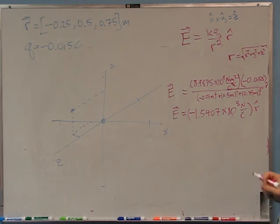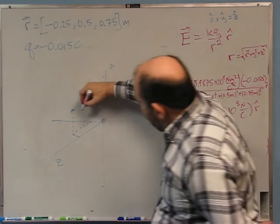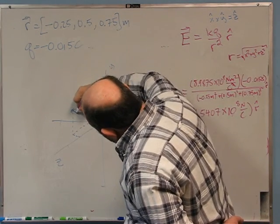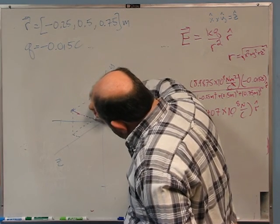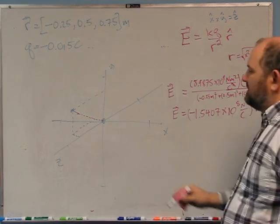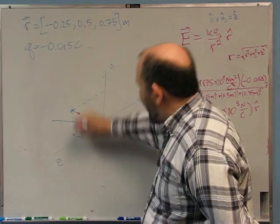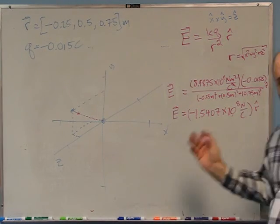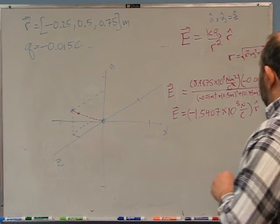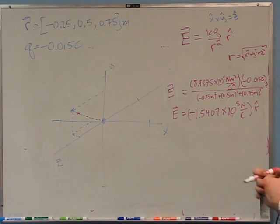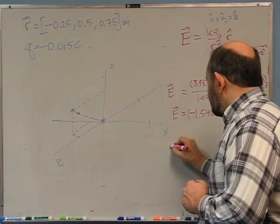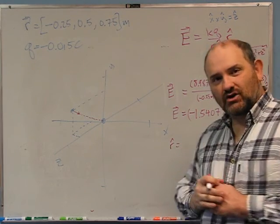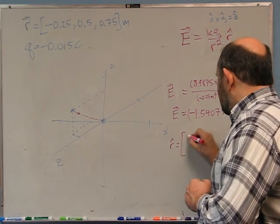In one sense I'm done — I have the electric field. Its direction is toward the origin; if I draw it, it points back toward the origin. But I'm going to go ahead and give you the X, Y, and Z components of this electric field. To do that I need to work out what R̂ is in terms of X, Y, and Z.